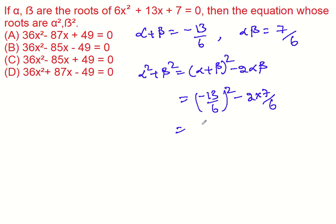13 square is 169, the minus becomes positive. 6 square is 36 minus 14 by 6. The LCM is 36. So 169, 6 divides 36 get 6, 6 times 14 is 84. Subtracting, we get 85 by 36.